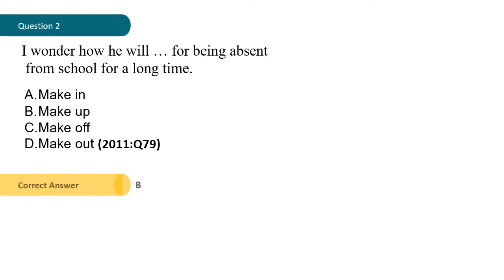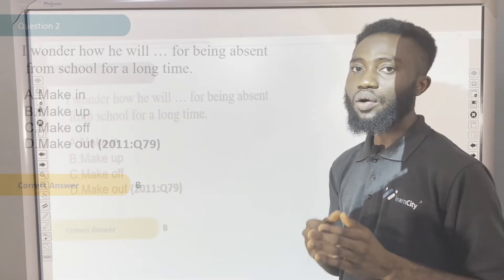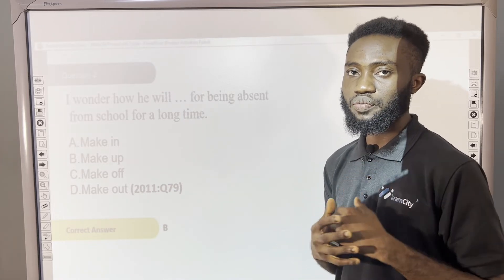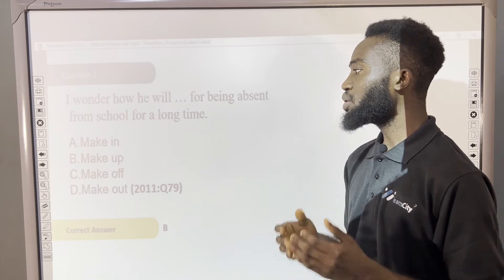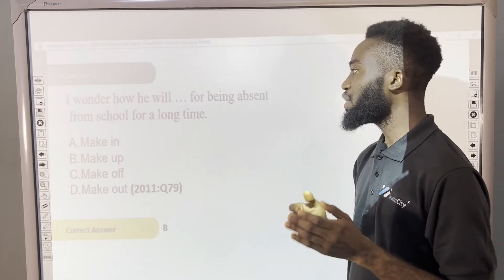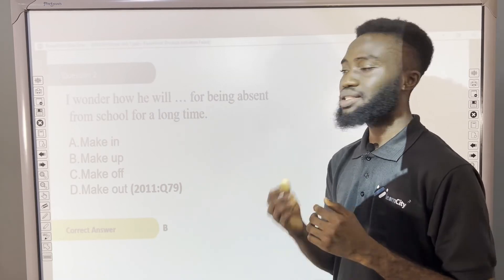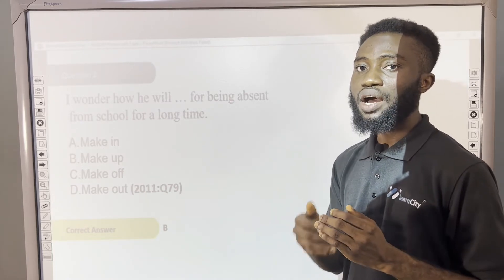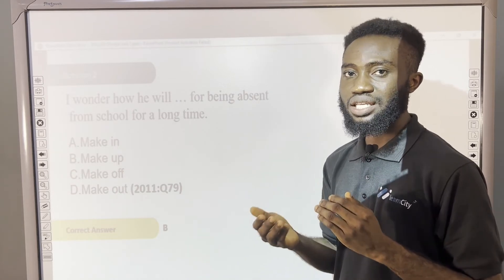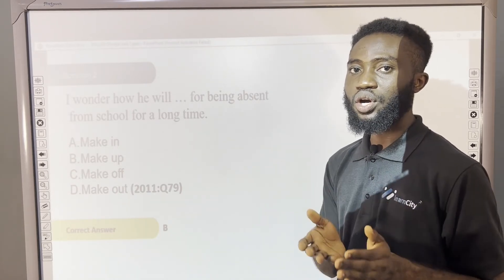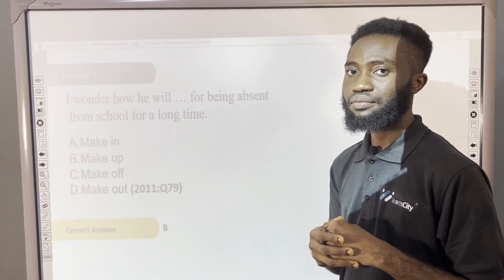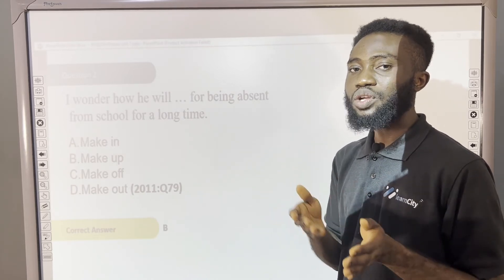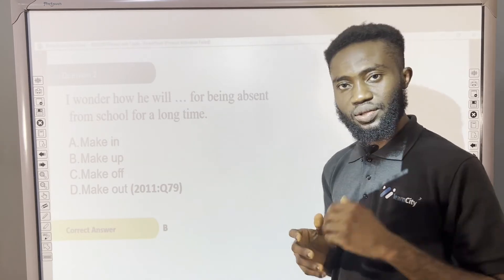The correct answer is option B: 'I wonder how he will make up for being absent from school for a long time.' B is correct because make up has to do with catching up on the activities that have been going on during his absence — catching up on what was carried out during his absence.